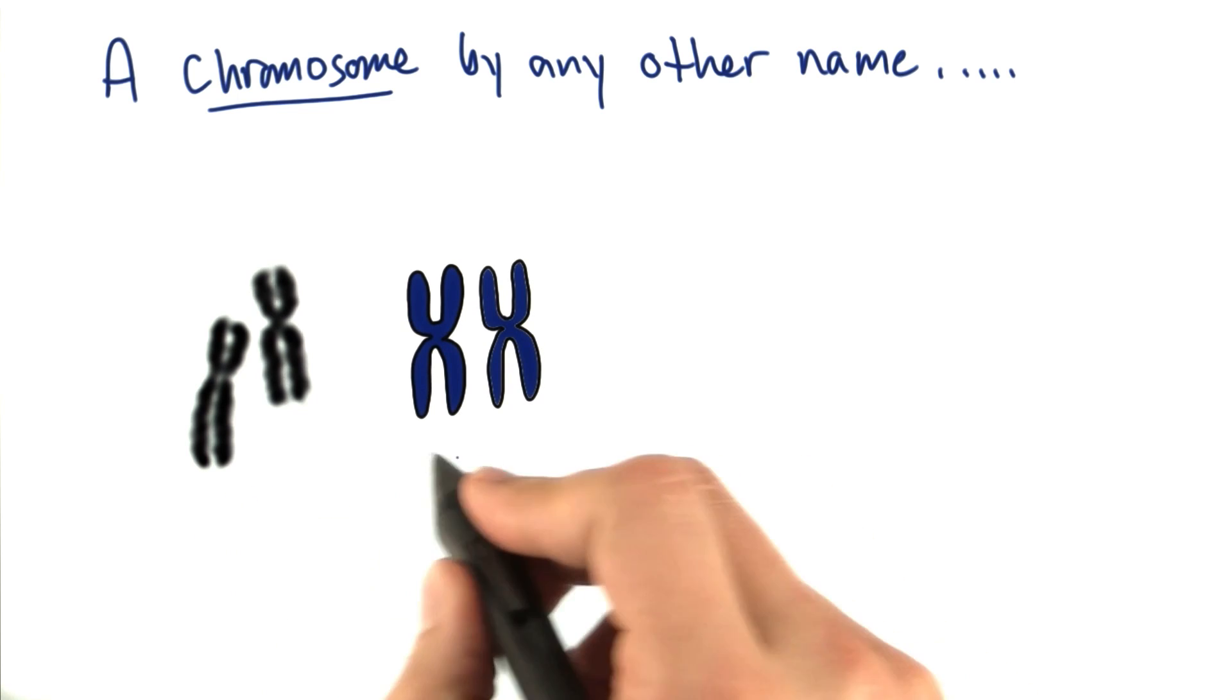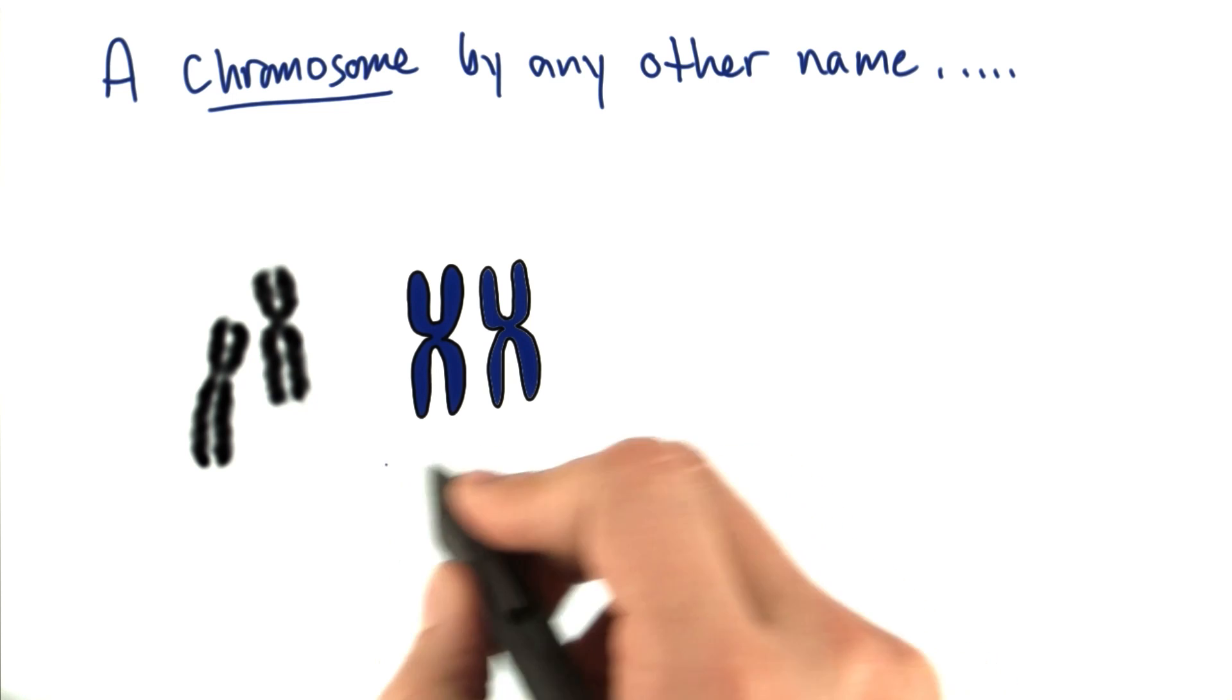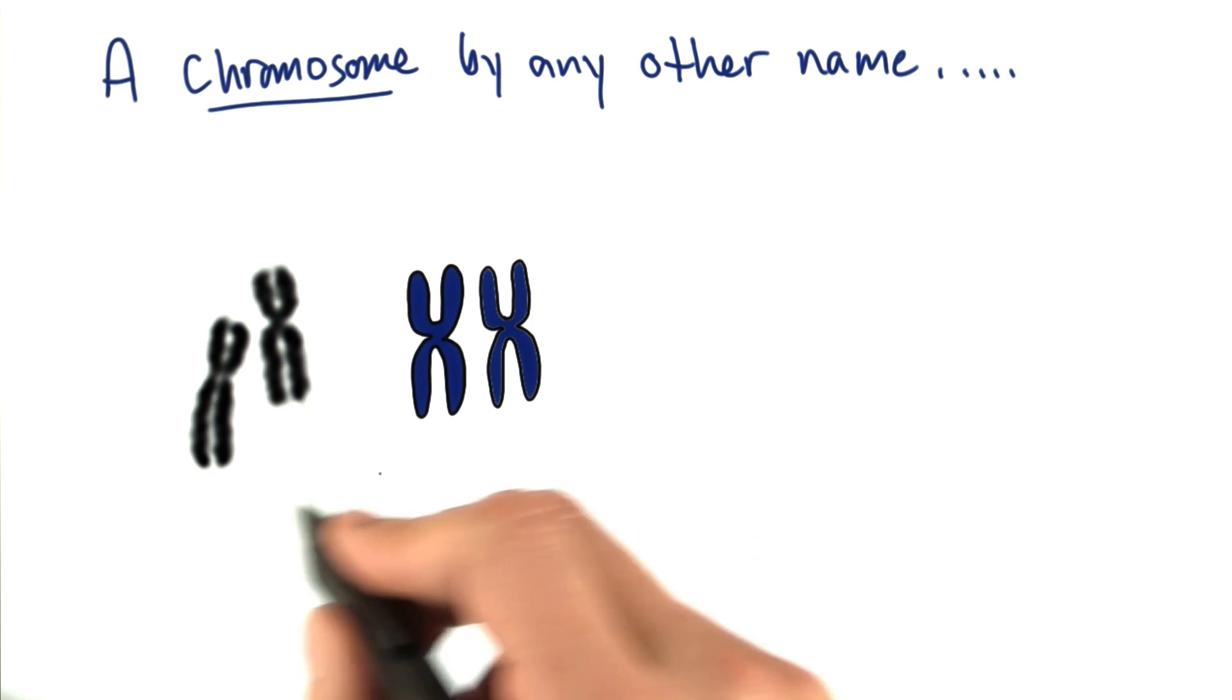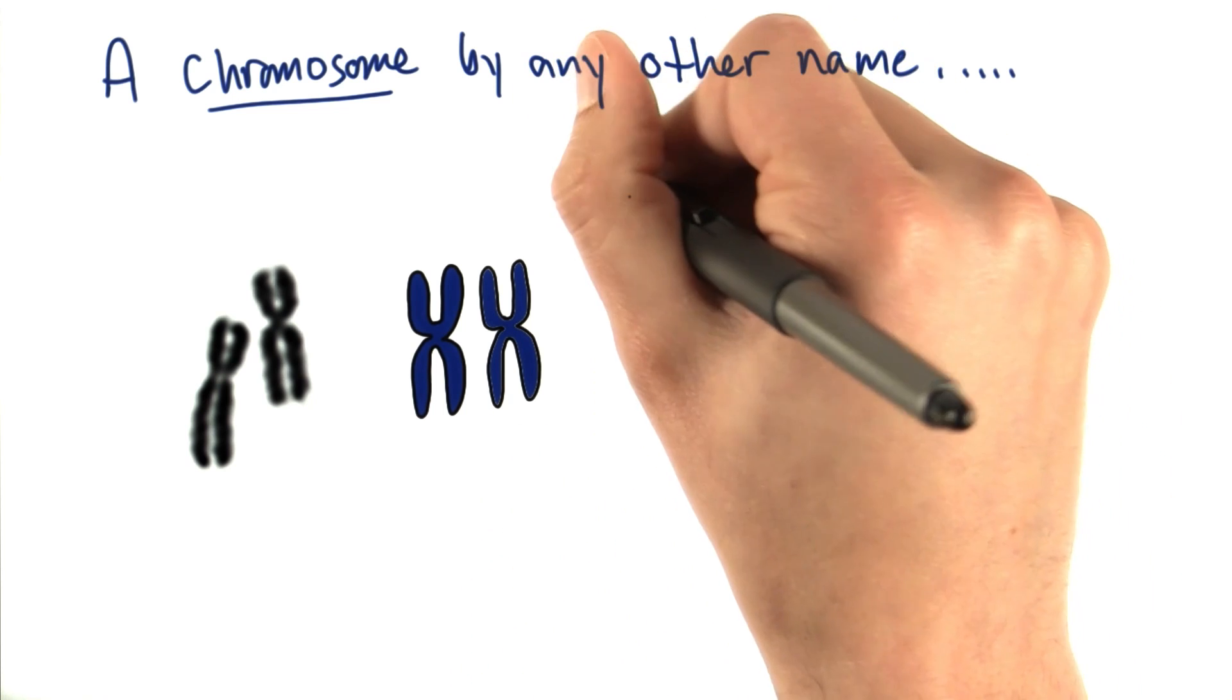If I were to try to draw them in cartoon form, this is how I would probably try to represent them. And although this is an accurate representation of what you see here, in reality this type of chromosome is called a duplicated chromosome.